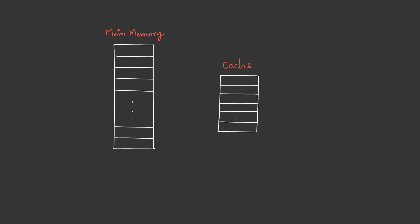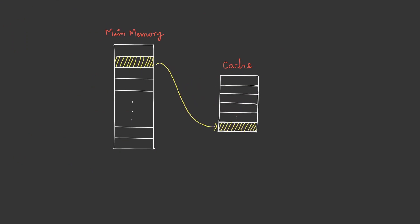In direct mapping, the disadvantage is restriction on the placement. To overcome that, we have the second mapping technique: associative mapping. In associative mapping, a memory block can be placed in any of the available cache lines.